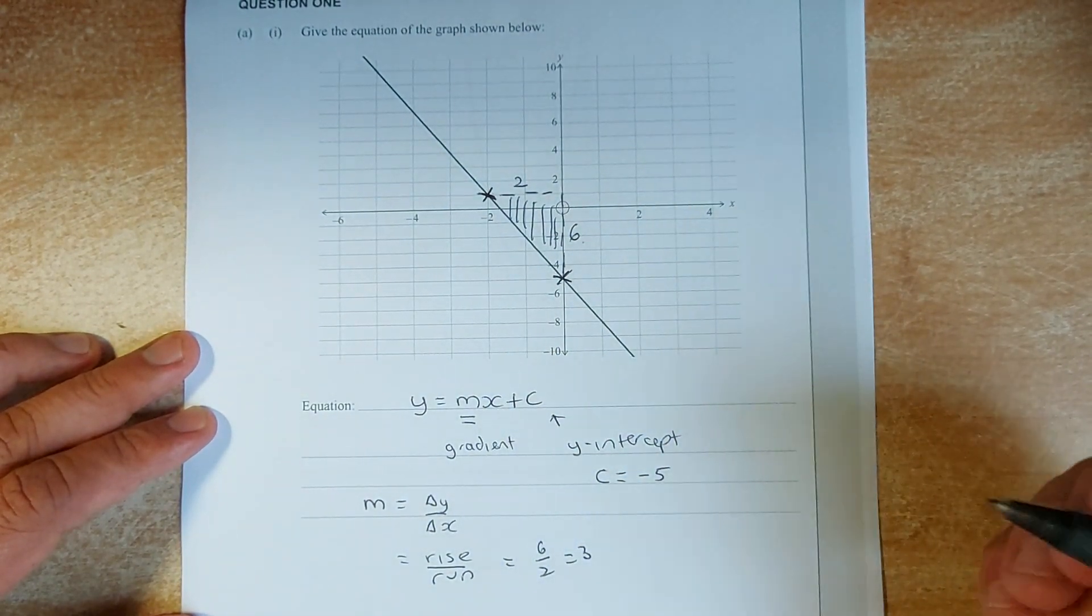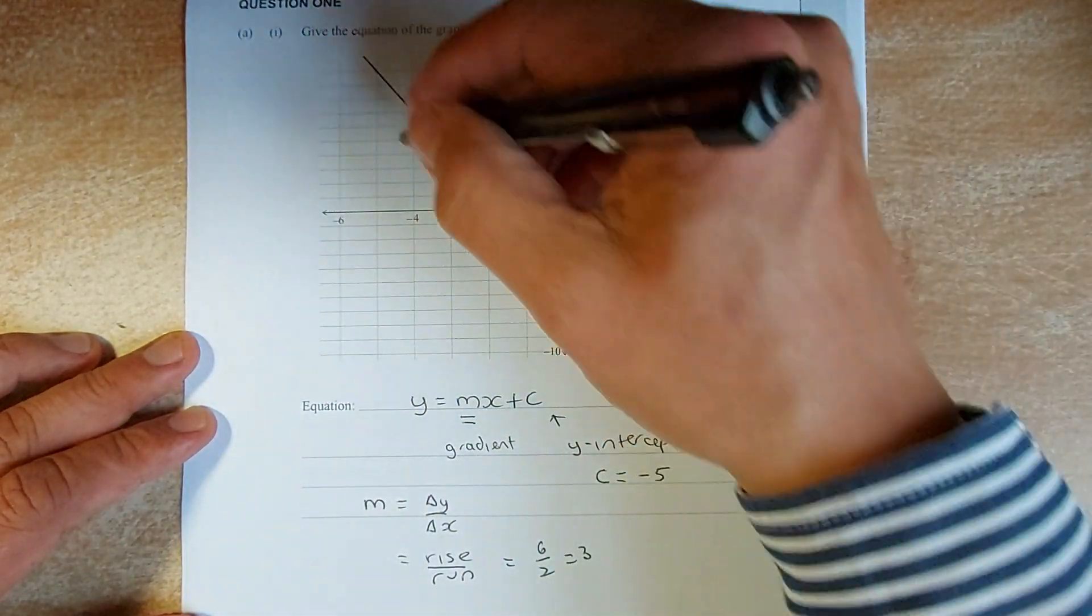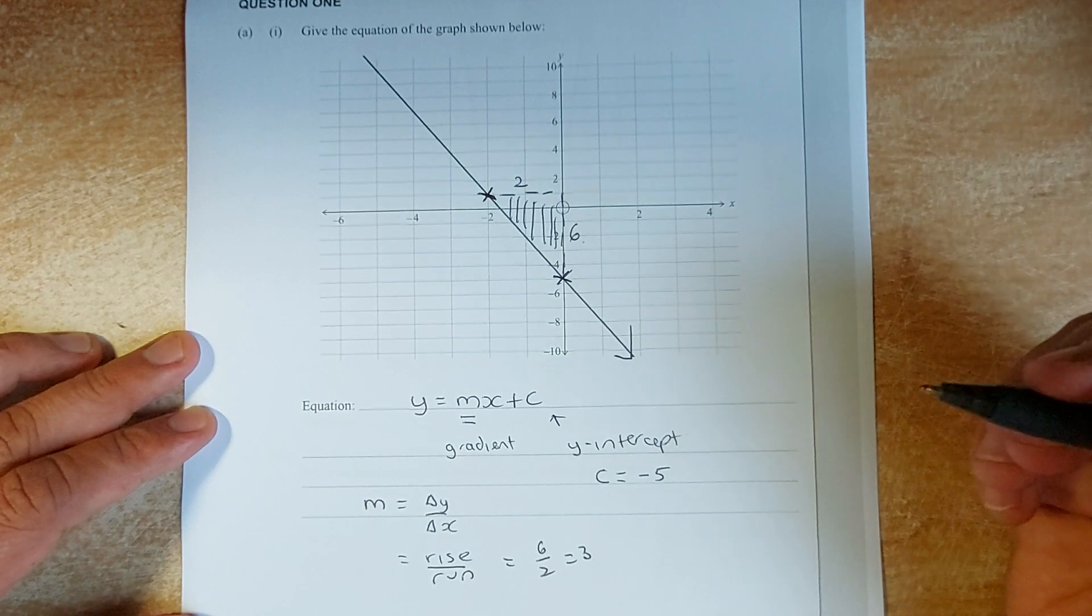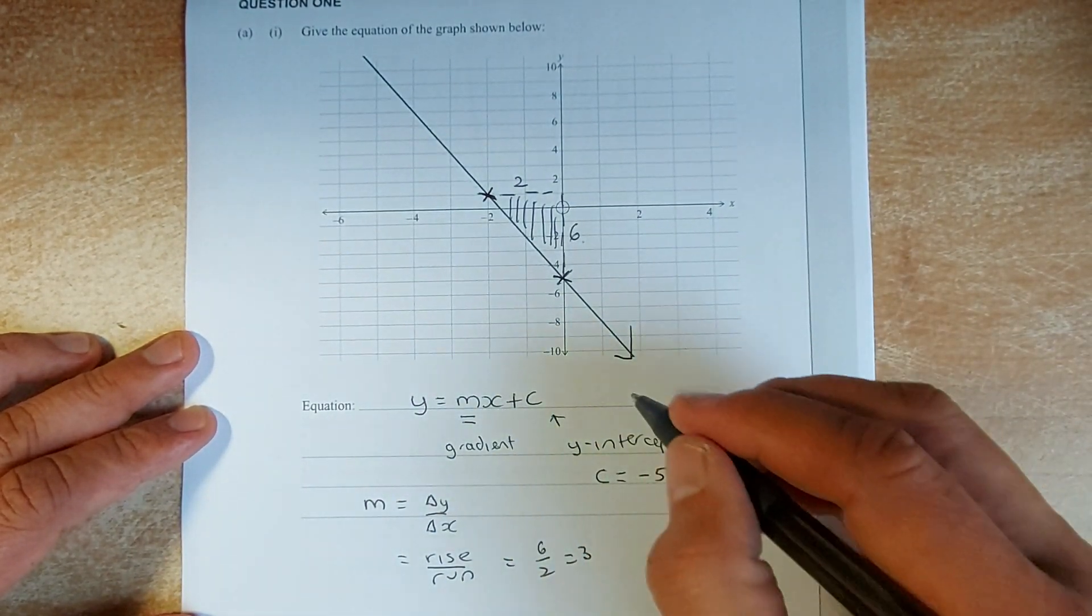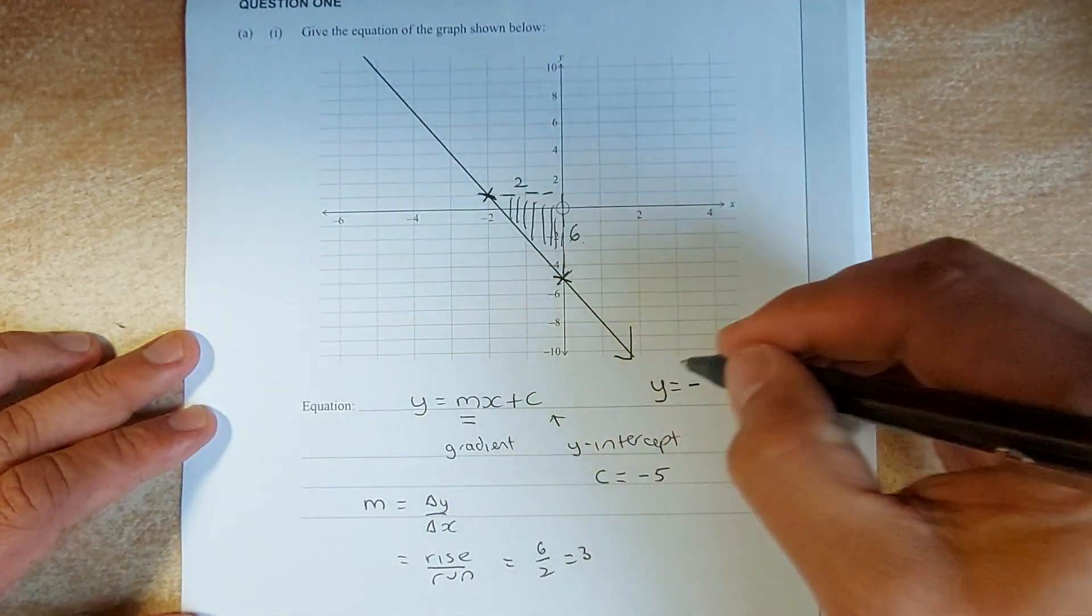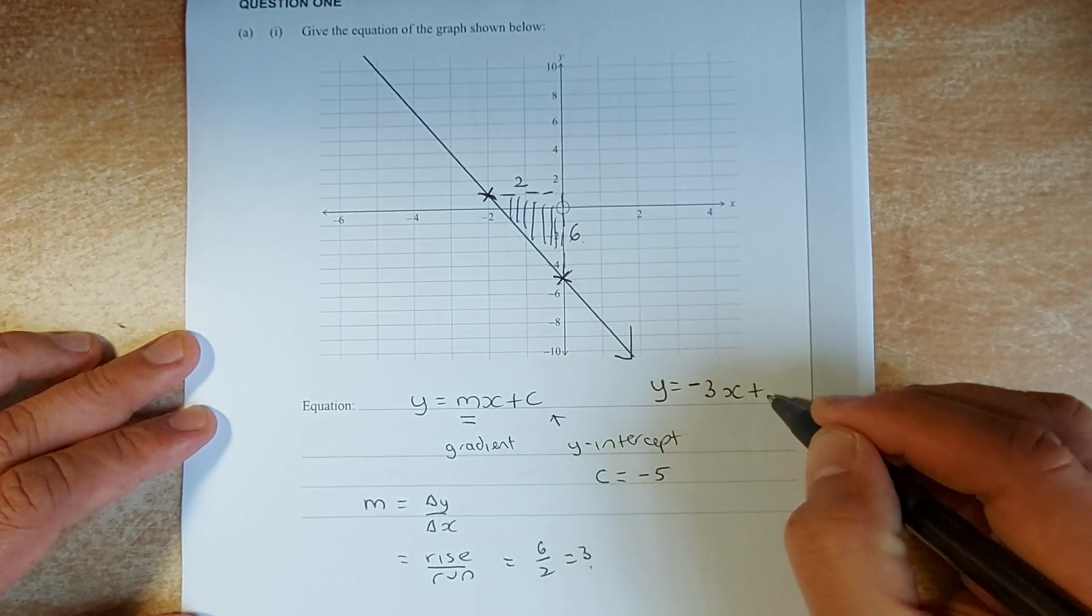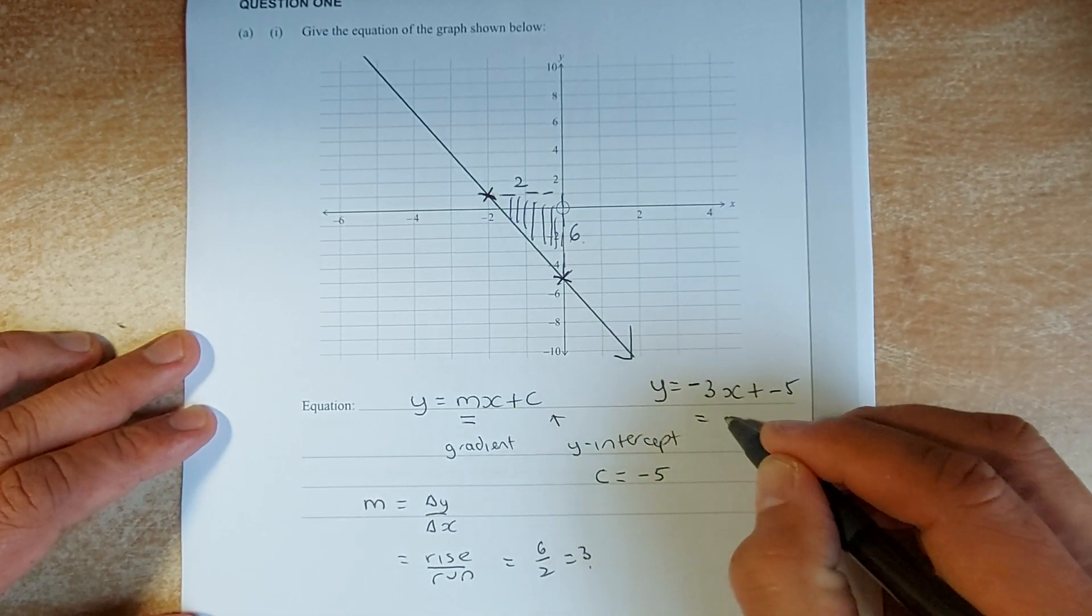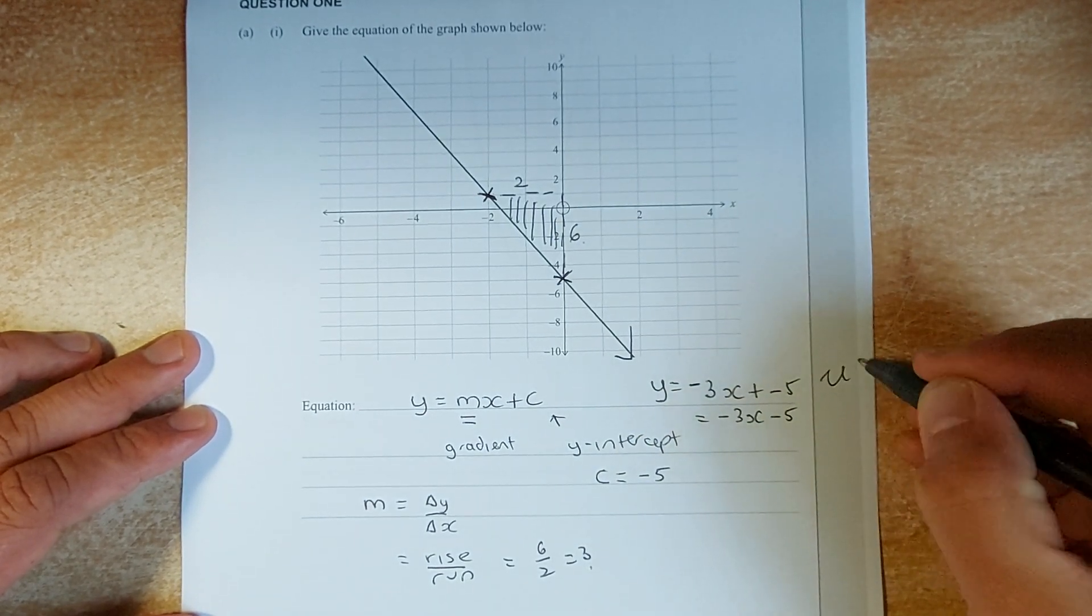And the last thing you need to know, whether you, from left to right, if you, from the left to the right, is the graph going up or going down, it is actually going down, so that will give you a negative gradient. So the final answer is going to be y equals to negative, because it's a negative gradient. The gradient is 3, so 3x plus negative 5, or simplify it as y equals negative 3x minus 5, and that is an achieve.